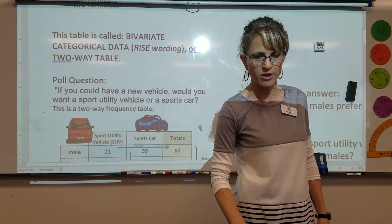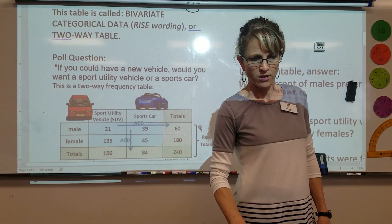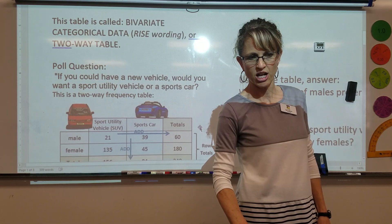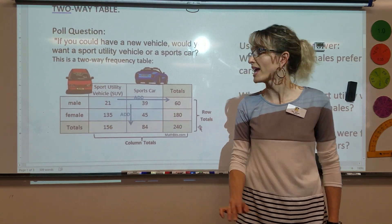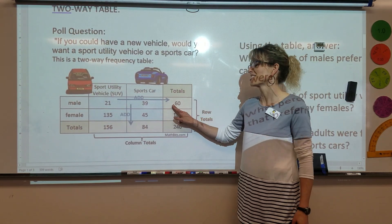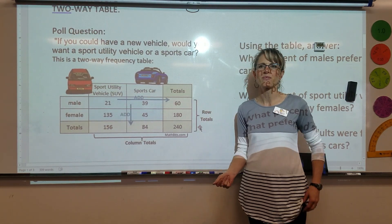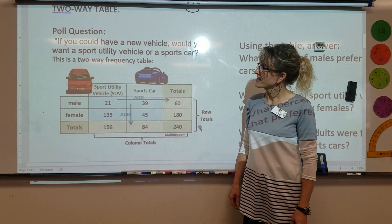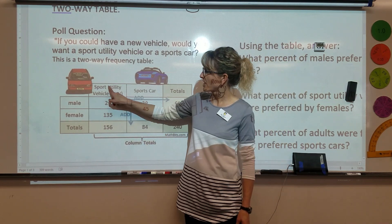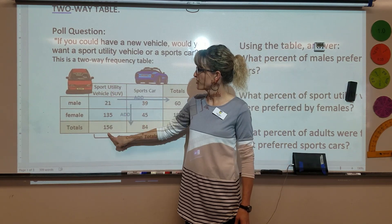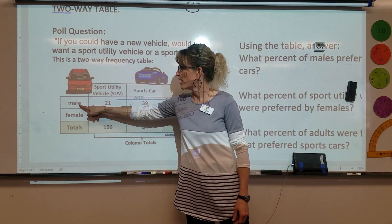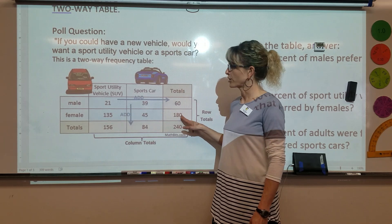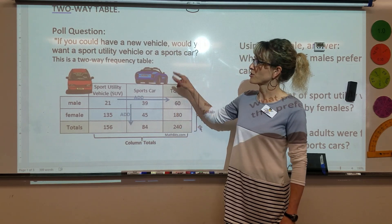So let's start. This table is a two-way table. It has categories: a sport utility, a sports car, a male category, and a female category. We're going to learn how to read that.